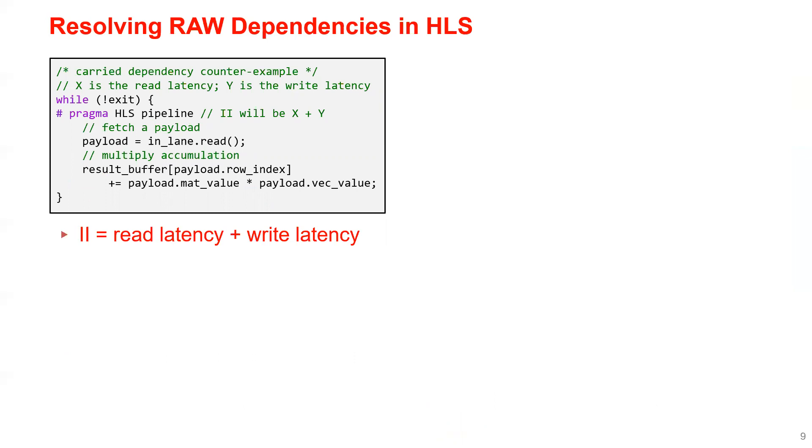If we're doing RTL, we might want to implement data forwarding to resolve it, but implementing data forwarding in HLS is not easy because the pipeline registers are not visible in the code.